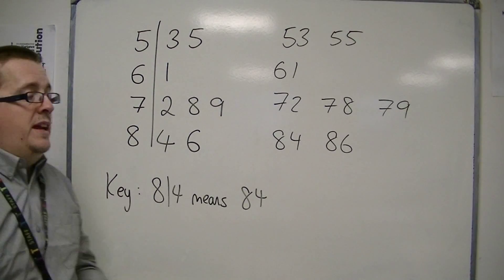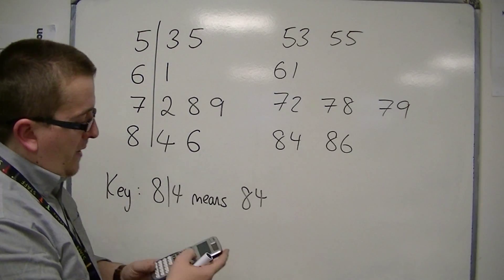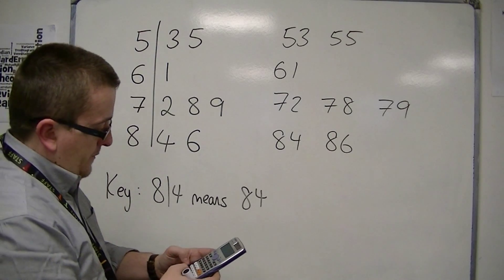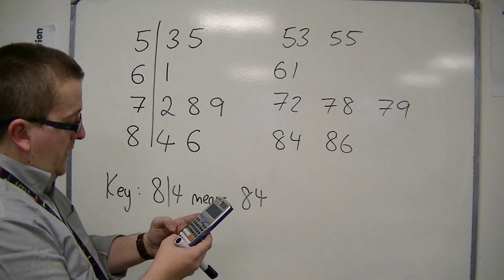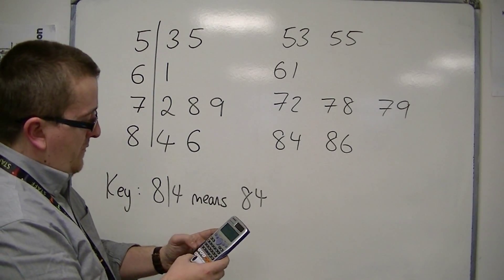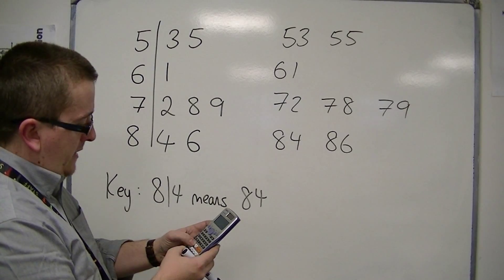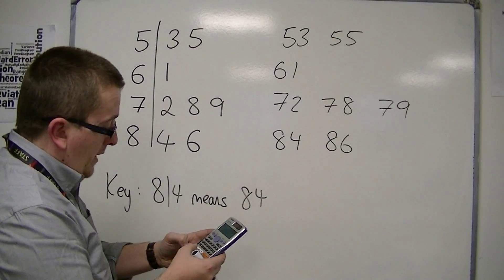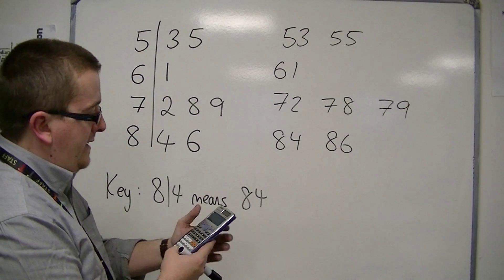And then I'm going to have to add them all up and divide by how many there are. So, 53 plus 55 plus 61 plus 72 plus 78 plus 79 plus 84 plus 86.